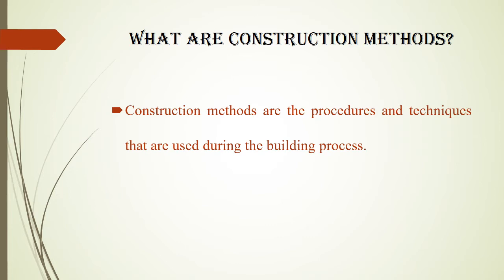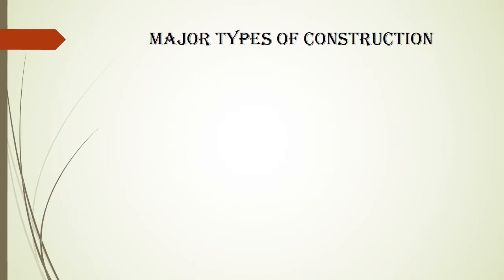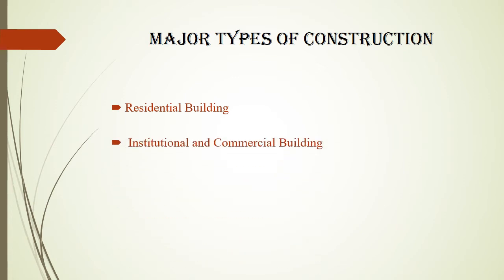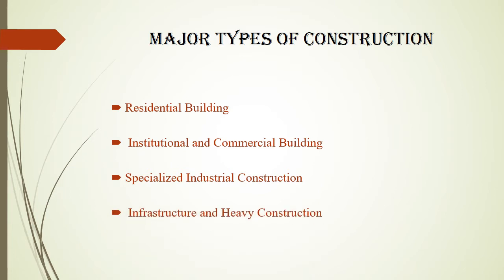The major types of construction include residential building construction, institutional and commercial building construction, specialized industrial construction, and infrastructure and heavy construction. These cover construction of residential buildings, institutional and commercial buildings, specialized industrial buildings, and development of infrastructure and heavy construction works.